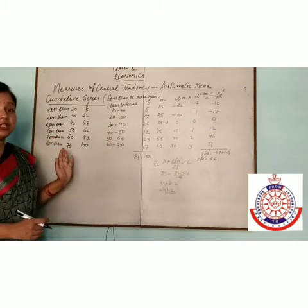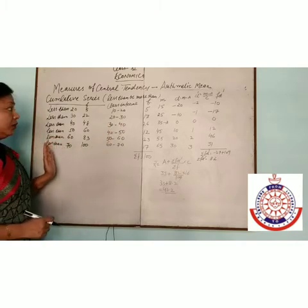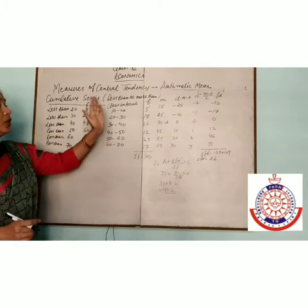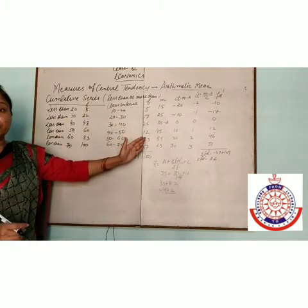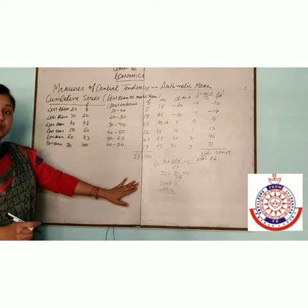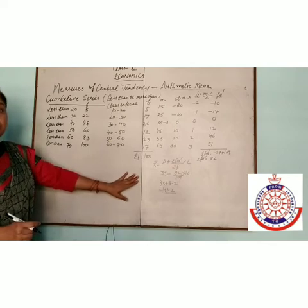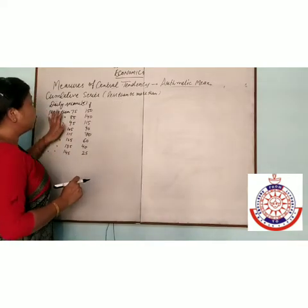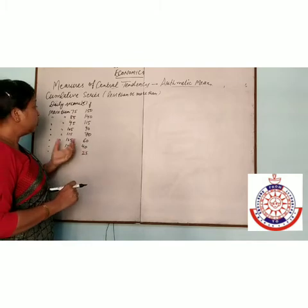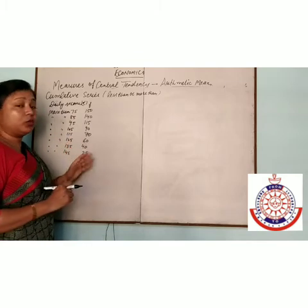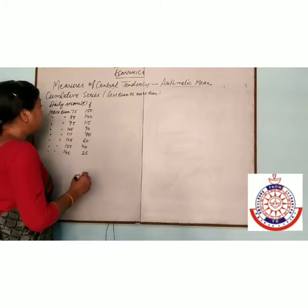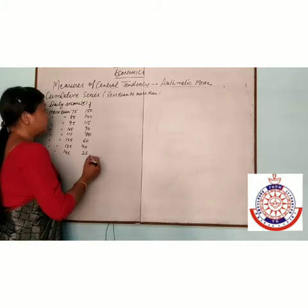You can solve questions using the step deviation method if a less-than series is given: convert to class interval, find mid-value, then D, then solve. Sometimes a more-than series is given, so you also have to convert the more-than series into the interval series.